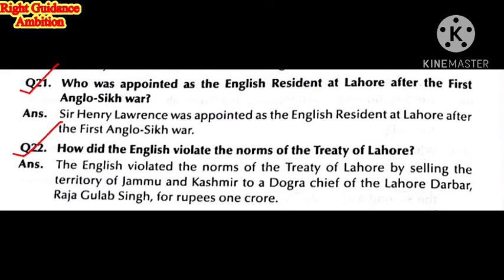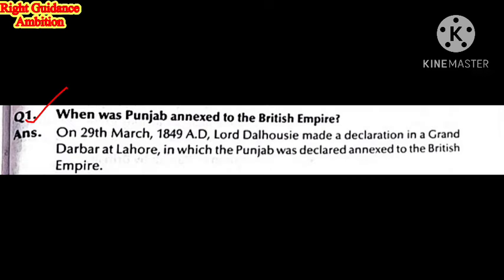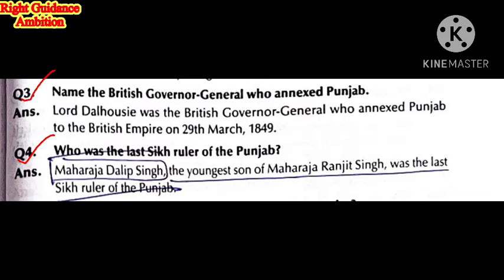The Treaty of Lahore had clearly mentioned that the area would remain with the Sikh community, but the British violated this. When was Punjab annexed into the British Empire? On 29th March 1849, General Gough declared at Lahore that Punjab was annexed into the British Empire. Name the British Governor General who annexed Punjab — Lord Dalhousie. Who was the last Sikh ruler of Punjab? He was the youngest son of Maharaj Ranjit Singh.